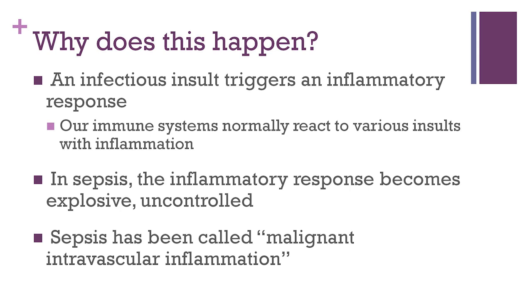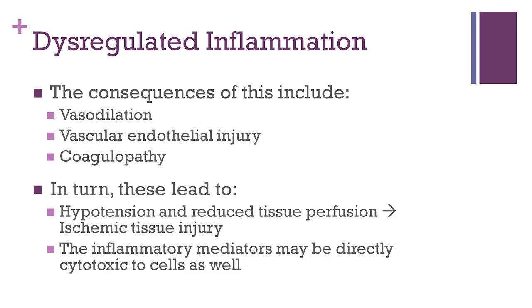The term intravascular is used because unlike the usual immune response, which is localized to the site of the insult, in sepsis you get a systemic immune response in which inflammatory mediators are transmitted throughout the bloodstream and can affect numerous different parts of the body. The numerous pro-inflammatory markers that are released include several different cytokines. The net effect of these mediators, broadly speaking, is systemic vasodilation, vascular endothelial injury, and coagulopathy. The combination of those three things results in hypotension and reduced tissue perfusion. If tissues aren't being perfused with blood, this causes ischemic tissue injury. Additionally, it is thought that the inflammatory mediators may also have direct cytotoxic effects on the tissues, thereby worsening tissue injury.